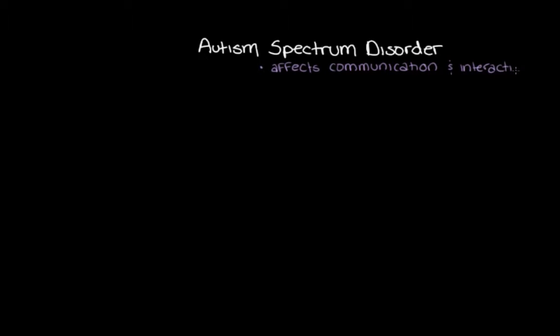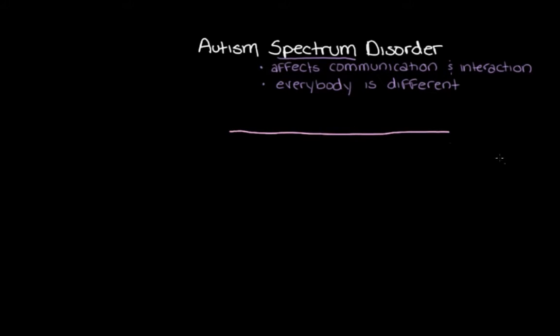Autism Spectrum Disorder is a really broad social disorder that affects the way that someone communicates and interacts with other people. The reason we call it a spectrum disorder is because each person with Autism Spectrum Disorder is affected a little differently — no two people are exactly the same. Along this spectrum, there are different symptoms, different challenges, and different abilities that vary a lot in severity and between different people.